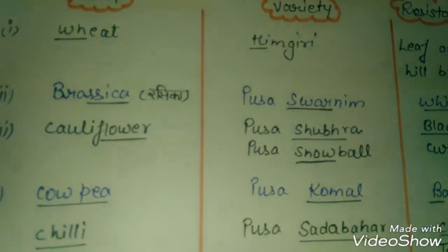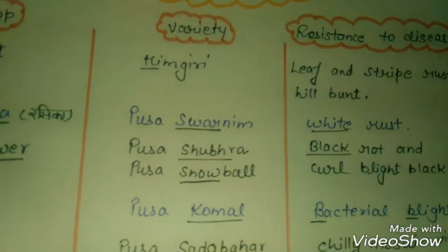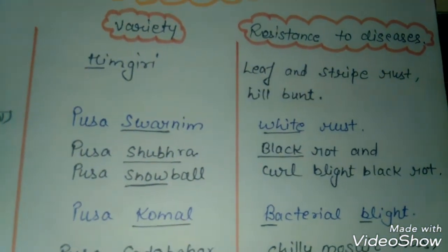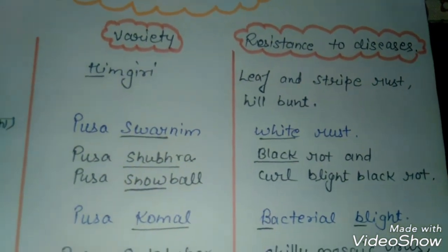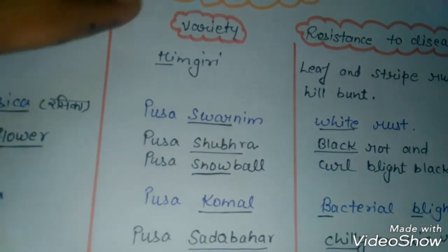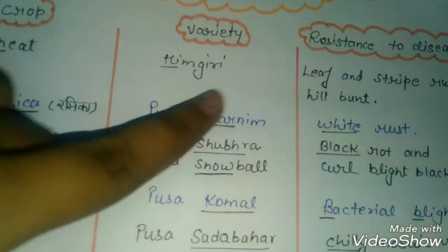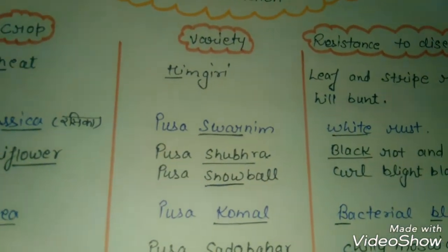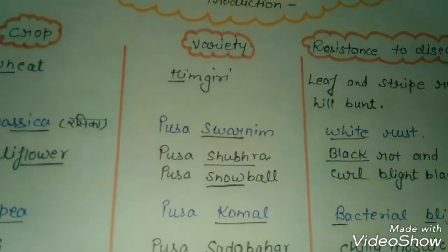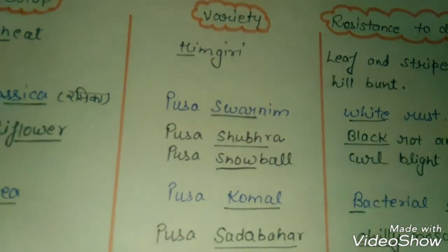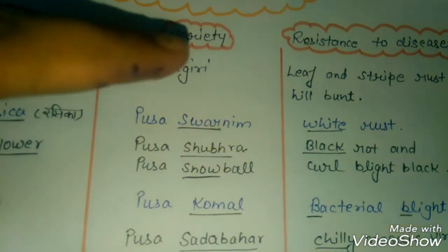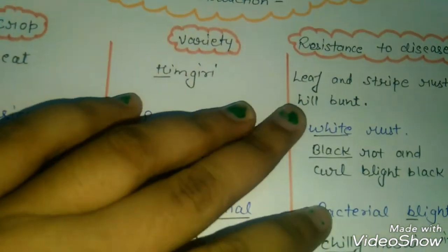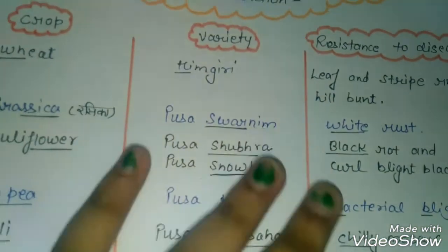Next is resistance to disease. Wheat is resistant to leaf and stripe rust. The variety is Hemgiri — think of 'Heme-giri', meaning the leaves are growing high up, which links leaf rust to Hemgiri. Next, wheat is also resistant to wheat bunts — so we link 'wheat bunts' directly to the wheat crop.